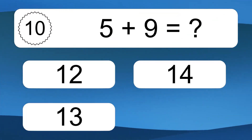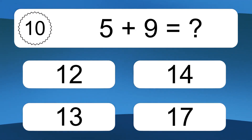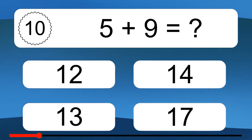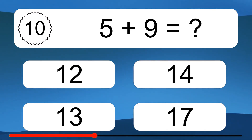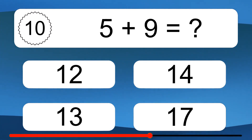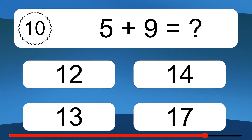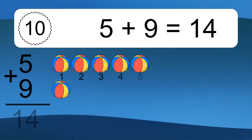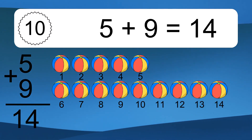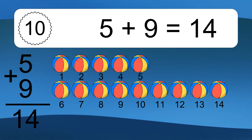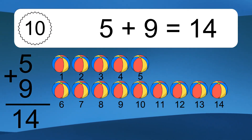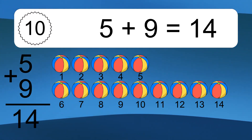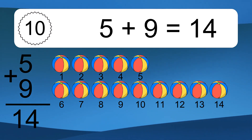5 plus 9 equals what? 5 plus 9 equals 14. Let's count it: 1, 2, 3, 4, 5, 6, 7, 8, 9, 10, 11, 12, 13, 14.